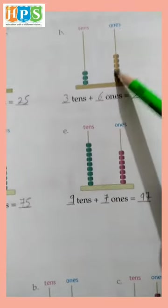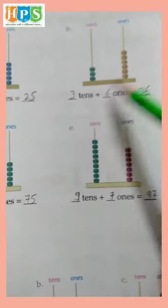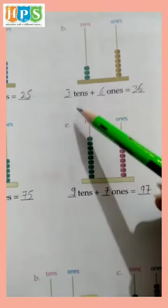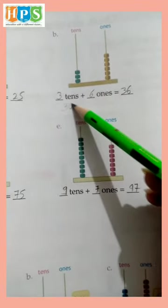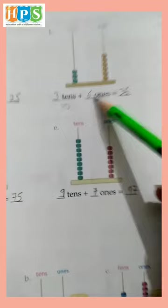One, two, three, four, five, six - six ones and one, two, three - three tens. Three tens means thirty. Thirty plus six equals thirty-six.